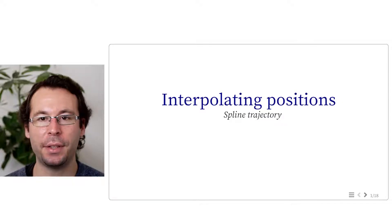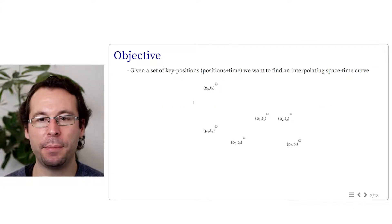In this part, we will see the methods to interpolate trajectory between key positions, and we first start with the notion of spline trajectory. As we saw previously, animations are often generated through the use of keyframes and require a method to interpolate the in-betweens. When keyframes are defined by position, the interpolation problem can be stated as follows.